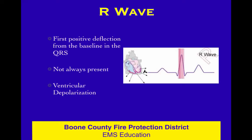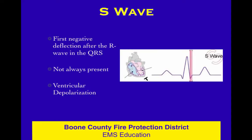In EKG interpretation, very seldom do we say always or never — a lot of times we say sometimes and usually. It's kind of a shade of gray, like the rest of EMS. The R wave and the S wave are both part of ventricular depolarization. The Q is the first negative, the S is the second negative, and the R is the positive in between. As a group — a complex, three waves — QRS represents ventricular depolarization. The P wave represented atrial depolarization; QRS represents ventricular depolarization.